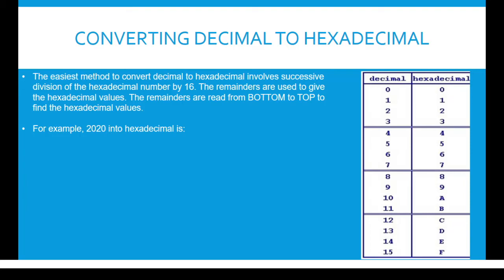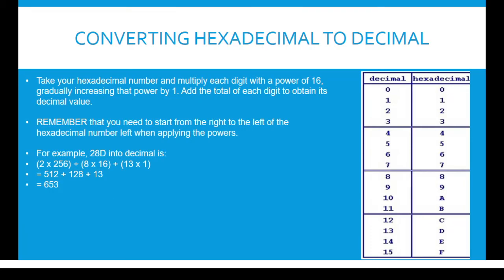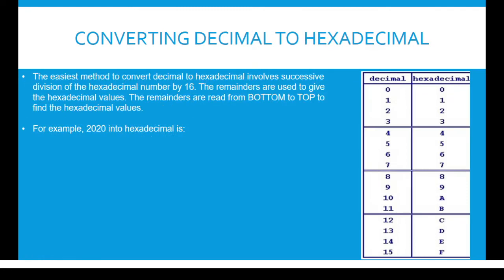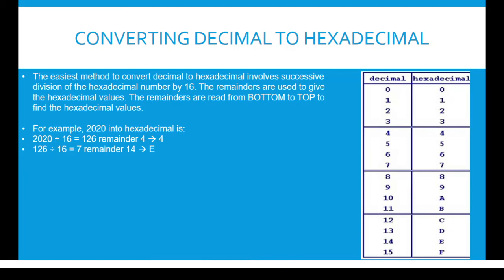Converting decimal to hexadecimal: the easiest method involves successive division of the decimal number by 16. The remainders are used to give the hexadecimal values, and they are read from bottom to top. Let's take 2020 as an example. 2020 divided by 16 is equal to 126 remainder 4, which is 4 in hexadecimal. Then 126 divided by 16 is equal to 7 remainder 14, which is E in hexadecimal. Then 7 divided by 16 is equal to 0 remainder 7, which is 7. Since we read the remainders from bottom to top, the hexadecimal number is 7E4.